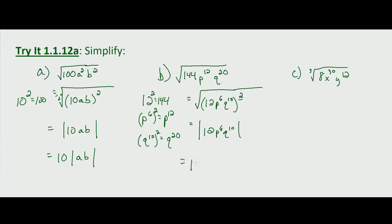The 12 comes out because we know it's positive, so this is 12 times the absolute value of p to the 6th times q to the 10th. But we should recognize that p to the 6th is going to be positive, and q to the 10th is also going to be positive, because their powers are even. So we don't need the absolute value, and the answer simplifies to 12 p to the 6th q to the 10th.